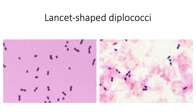Then you also have your lancet-shaped diplococci. Unlike your regular cocci, lancet-shaped diplococci have a more flattened appearance and may be confused with your coccobacilli. However, you should note that these are still considered cocci. The most common isolate displaying this morphology is Streptococcus pneumoniae.